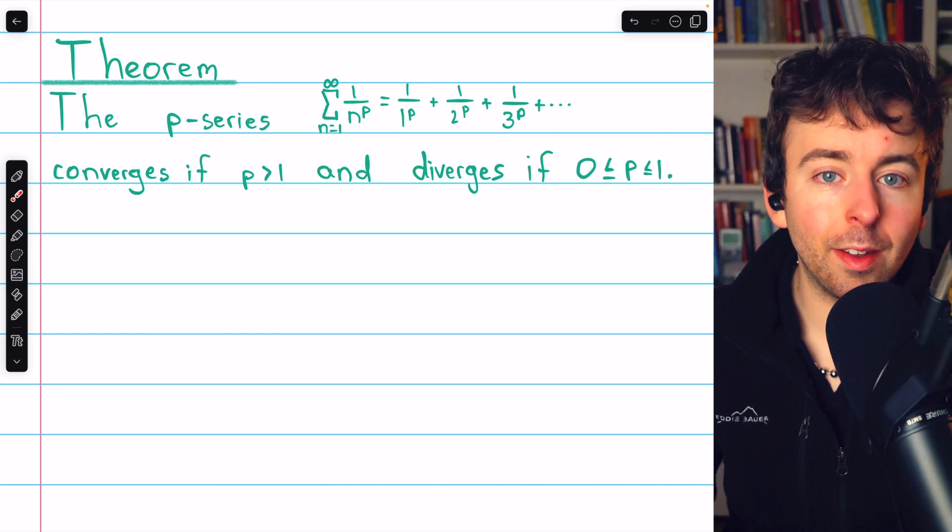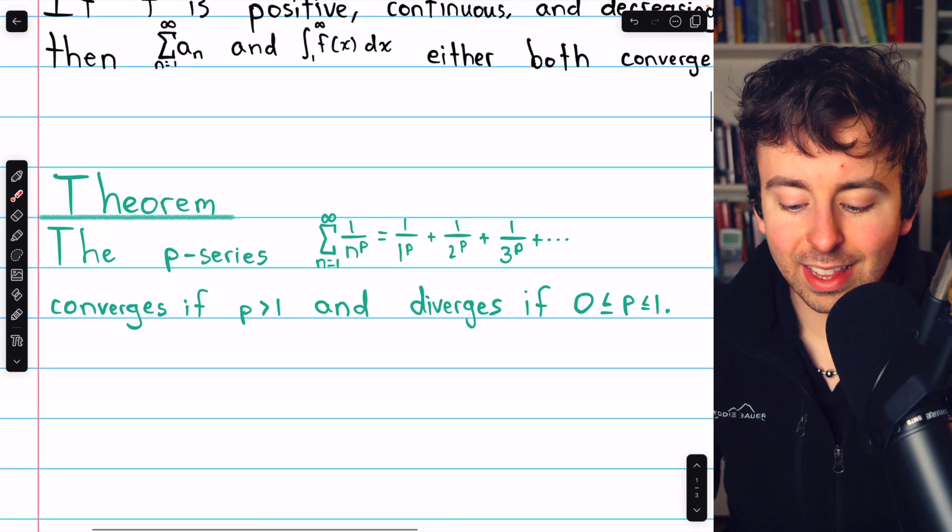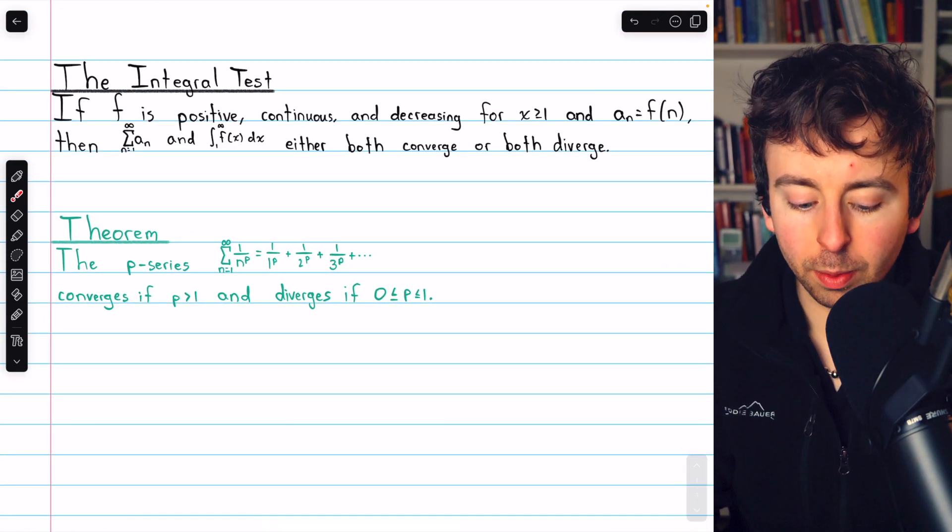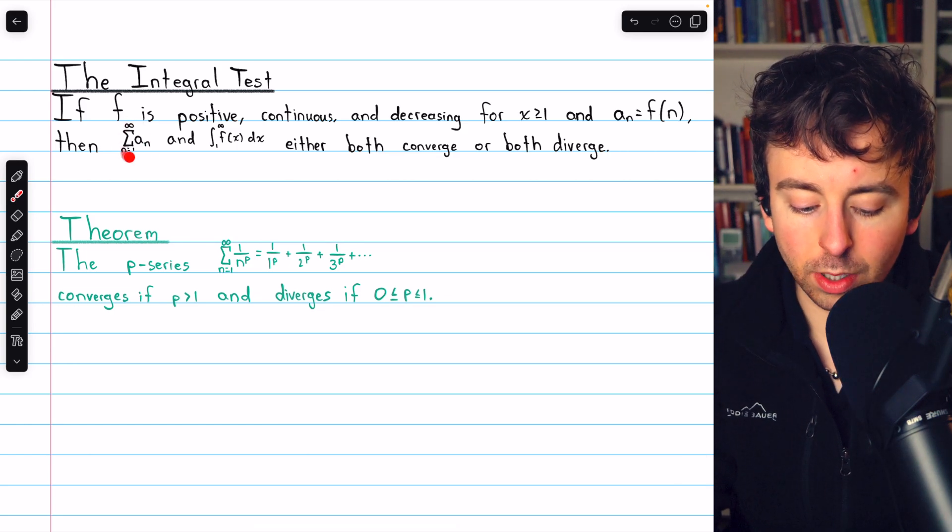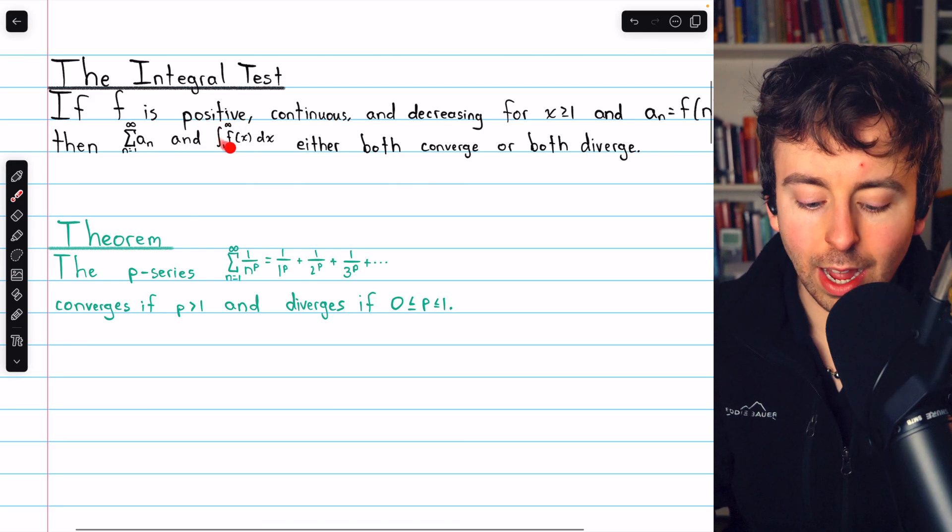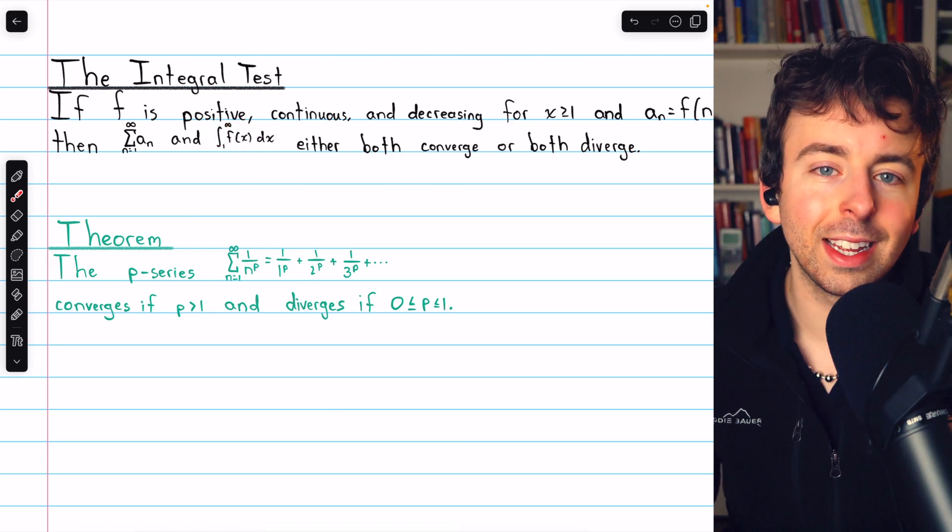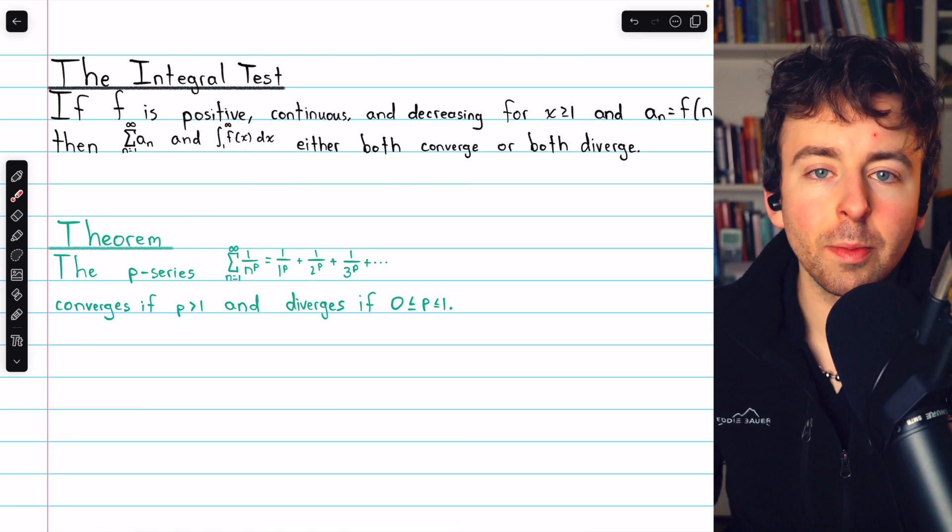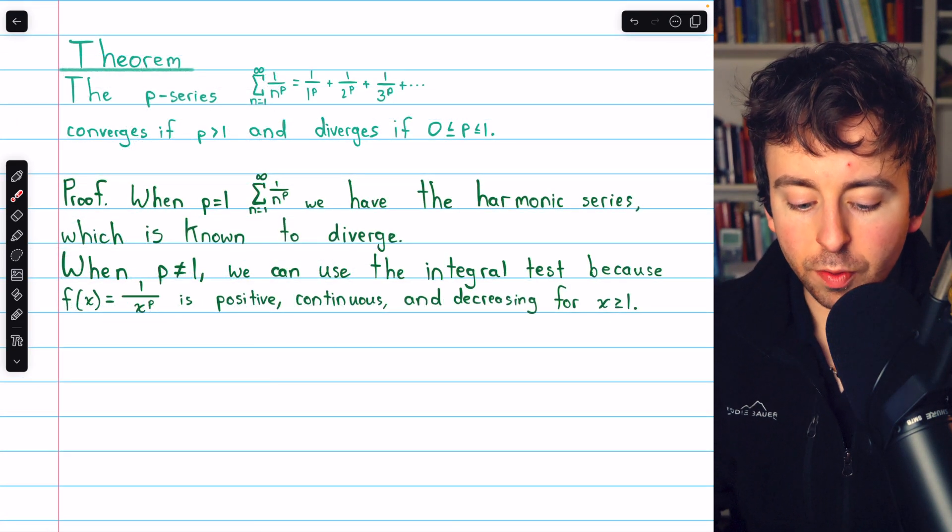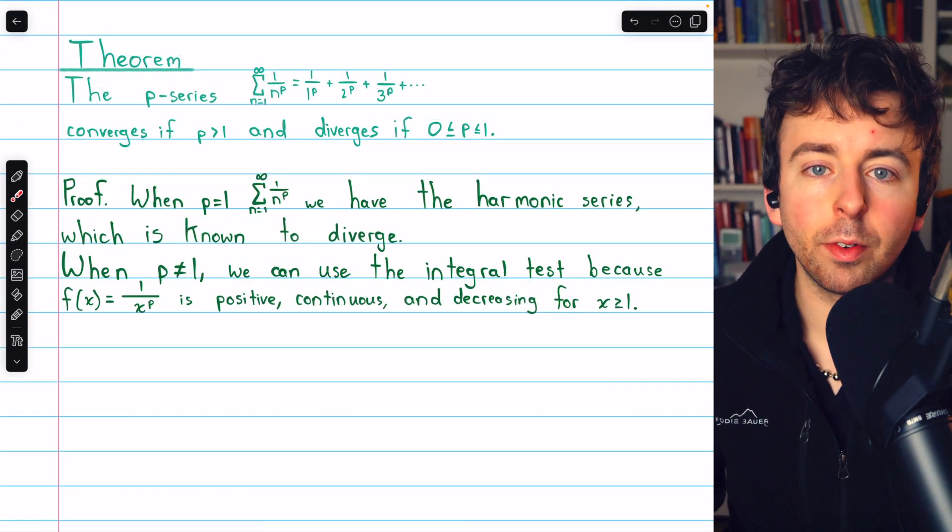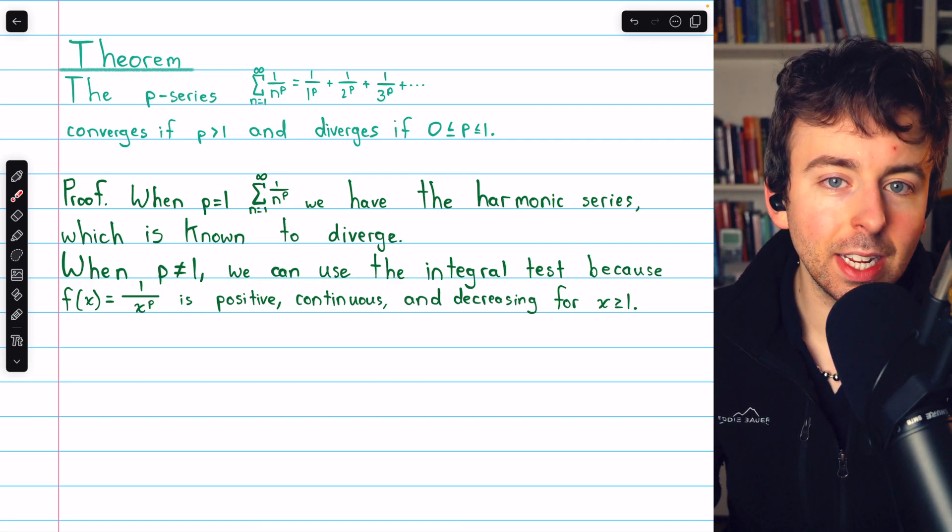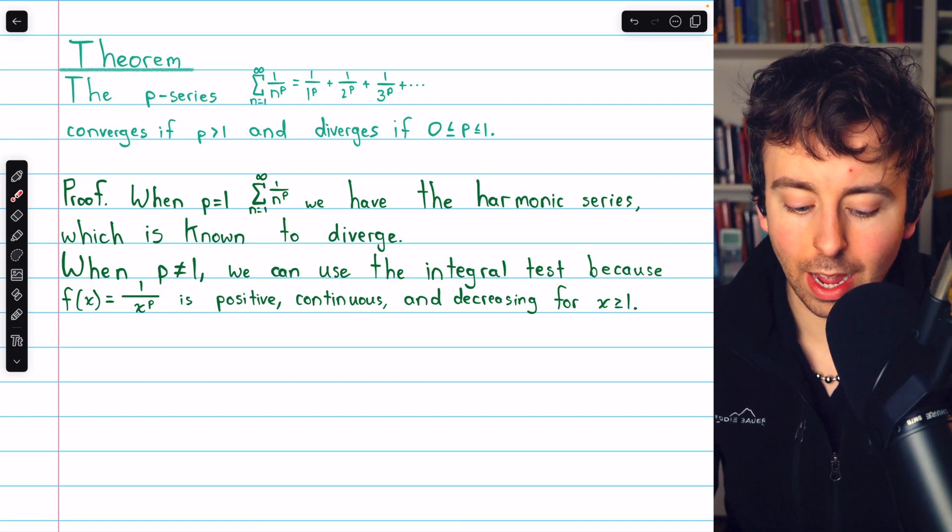We'll prove this behavior of p-series using the integral test, which I've written here in case you've forgotten it. We'll be able to evaluate the convergence or divergence of a series by evaluating the convergence or divergence of this corresponding integral. Link in the description to my lesson introducing the integral test if you need to review. So let's go through the proof that this is indeed the behavior of p-series, and we'll finish with a few examples.